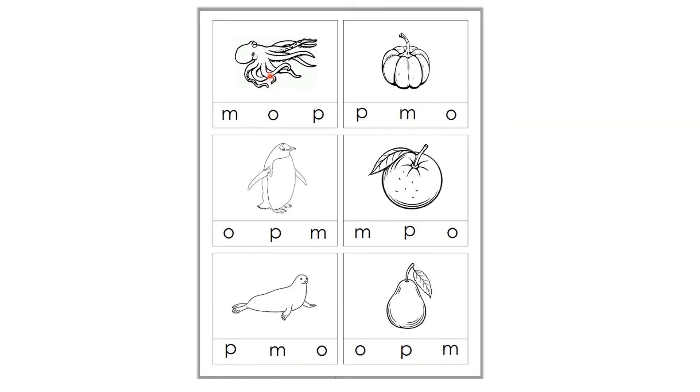The picture is this. Octopus, octopus. What is O? Let's find O. Here it is. Now you are going to find rest of the pictures for O and circle them.